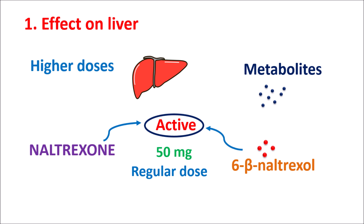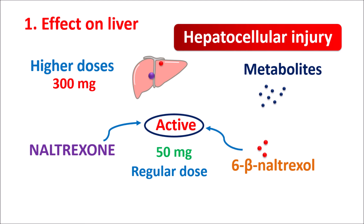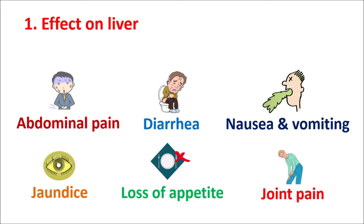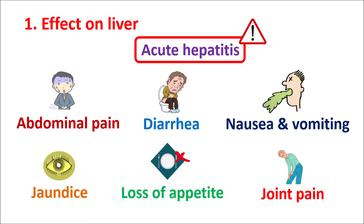But when using at higher doses such as 300 mg, which is a toxic dose, both Naltrexone as well as its metabolite can produce some hepatotoxicity resulting in hepatocellular injury. You have to carefully observe symptoms like abdominal pain, diarrhea, nausea and vomiting, yellowing of skin as well as eyes, unexpected loss of appetite, and joint pains — all of which may indicate the development of acute hepatitis. While using Naltrexone for longer periods, if these symptoms develop, liver functionality should be carefully monitored. It is always better to use Naltrexone at lower doses to avoid any damage to the liver.